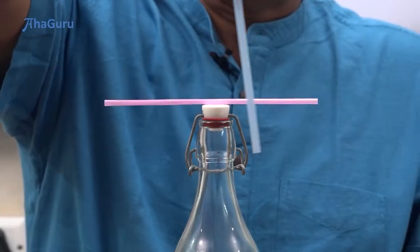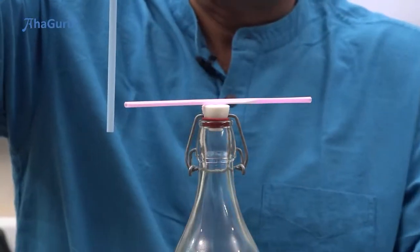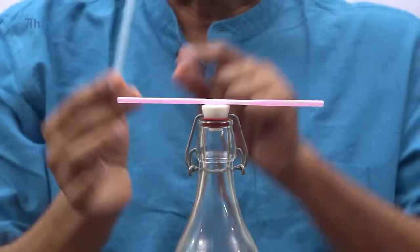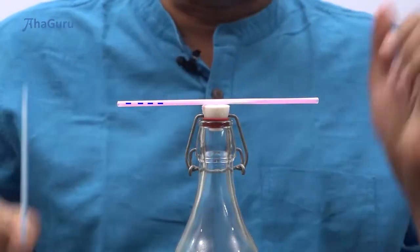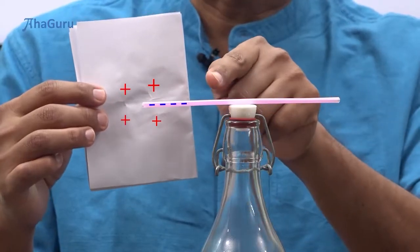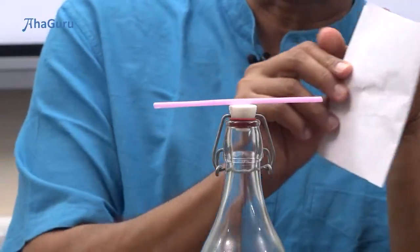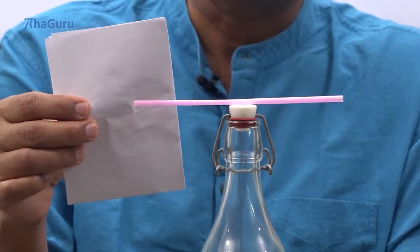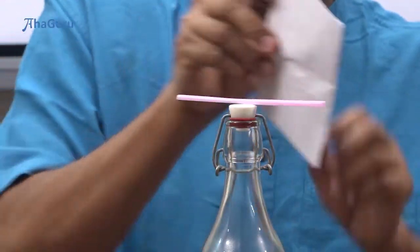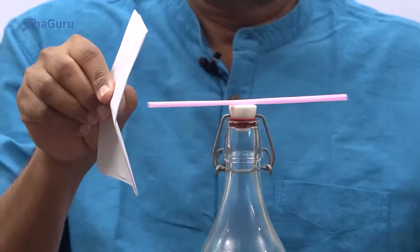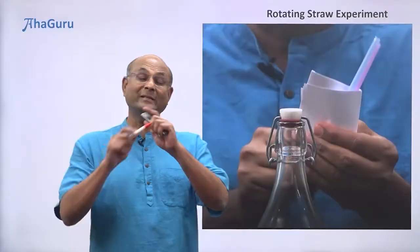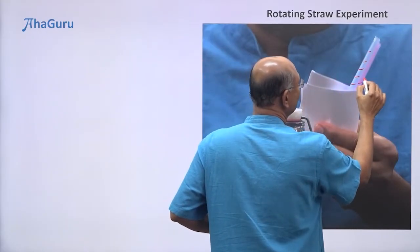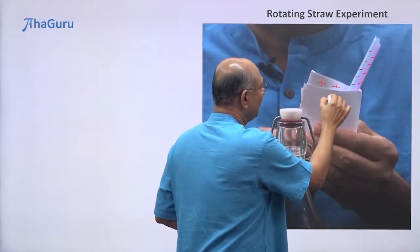In fact, I can make the pink straw keep going round and round because the blue straw is pushing without touching, even at a distance. If I bring it from the other side, I can make it run around continuously. The blue straw and the pink straw both have the same type of charge — negative charge. But the paper is positively charged, so if I bring the paper towards the straw, you can see the straw getting attracted. I bring the paper close to the straw and then the straw gets attracted to the paper.